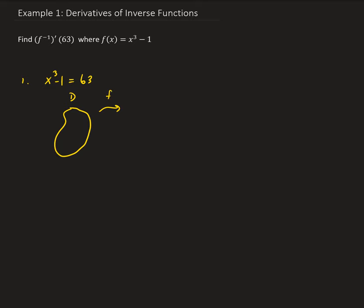This is our function, so we have our range, and then f inverse is here. This is the domain for f inverse, and this is the range for f inverse. The value that we're given is 63, and we want to find the corresponding value in the domain of f.